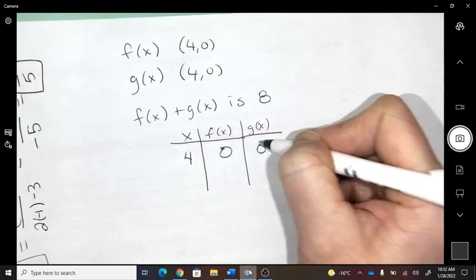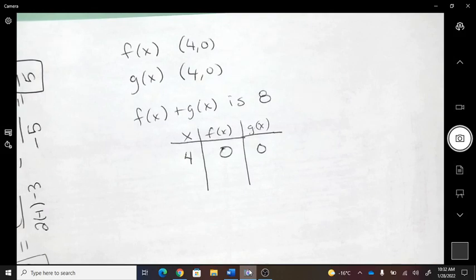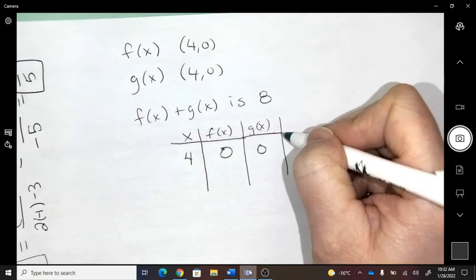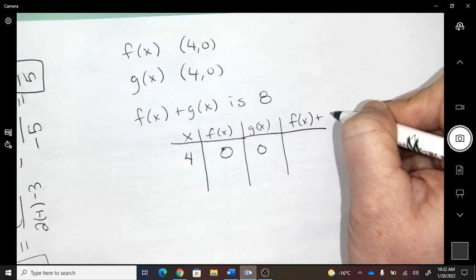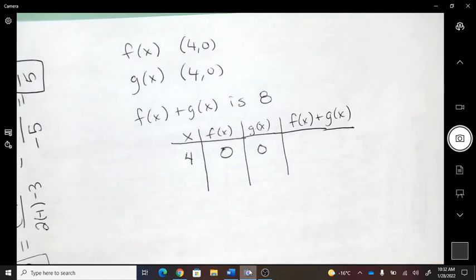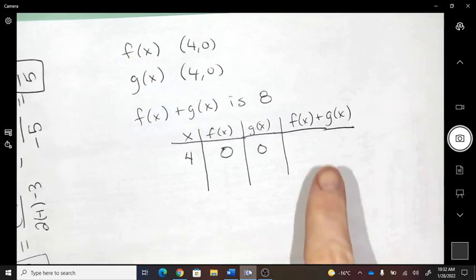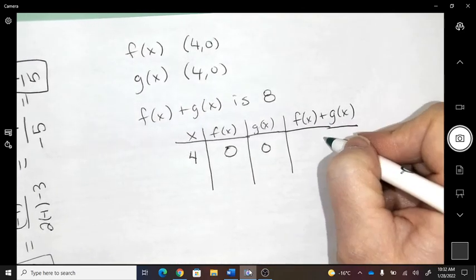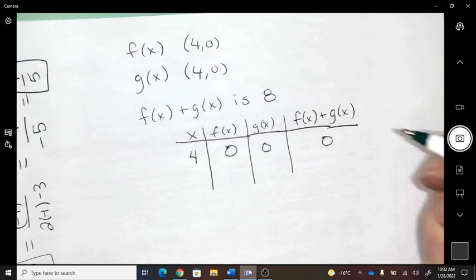At 4, the g-function, so if you were to graph a point on the added function, what do you get when you add those two functions? What's 0 plus 0? 0.